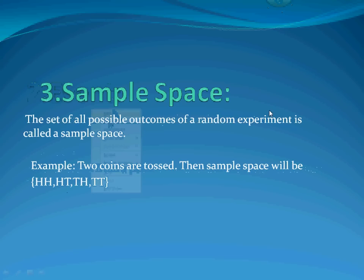Then is the sample space. The set of all possible outcomes of a random experiment is called the sample space. For example, if we toss 2 coins, we get the sample space as {HH, HT, TH, TT} — that is head-head, head-tail, tail-head, and tail-tail.